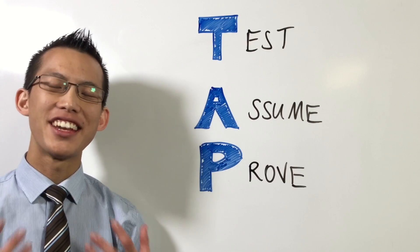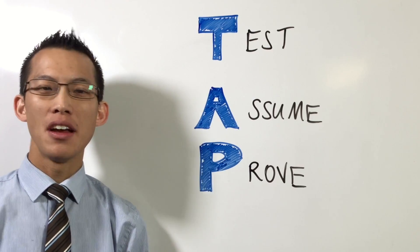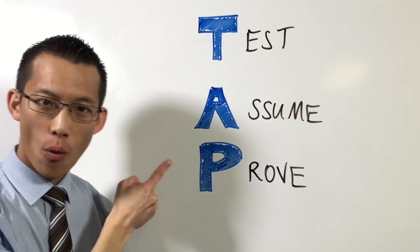And just like a row of dominoes, all it takes is a tap to make induction work. Mathematical induction has three essential parts. We test, we assume, and finally we prove.